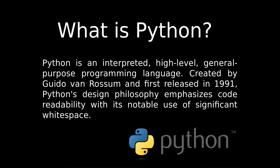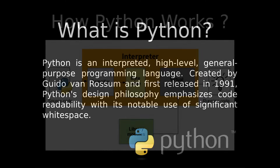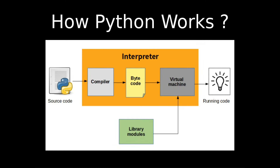Now we have sufficient knowledge to see how Python works. The working of Python consists of mainly five phases: first is source code, second is compiler, third is bytecode, fourth is virtual machine, and the last is running code. We will see each one by one.